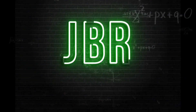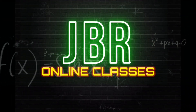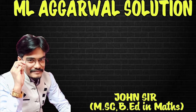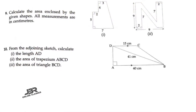Hello guys, welcome and welcome back to my channel JBR Online Classes. Like, share and subscribe to my channel. Now in this video, I'm going to start from sum number 9, exercise 18.2. This is the second part from this exercise. For the previous one, please check the description box — the link will be there. Here in sum number 9, calculate the area enclosed by the given shapes. All measurements are in centimeters.